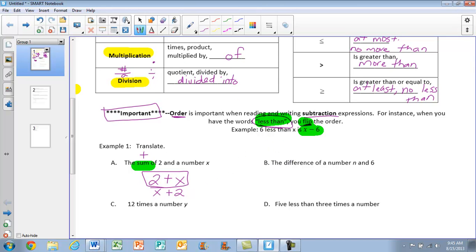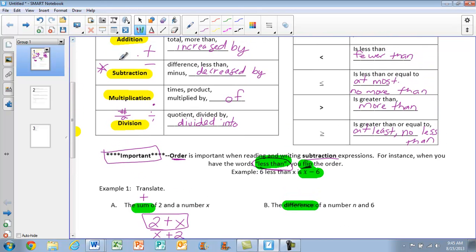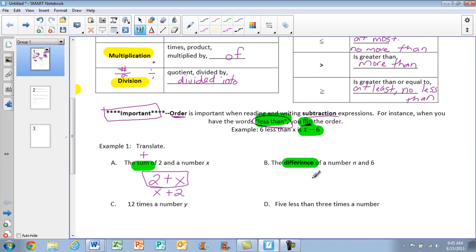B, the difference of a number n and 6. So difference is subtraction. We're not going to be flipping there. So we want to keep it in the order that it's shown. So n minus 6.